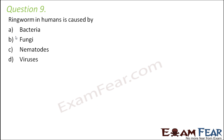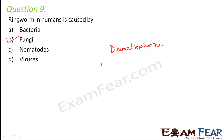Ringworm in humans is caused by bacteria, fungi, nematodes or viruses. Ringworm is caused by fungi. The fungi causing ringworm enters the body through contaminated soil or contaminated objects. Such fungi cause skin problems and these types of fungi are known as dermatophytes.